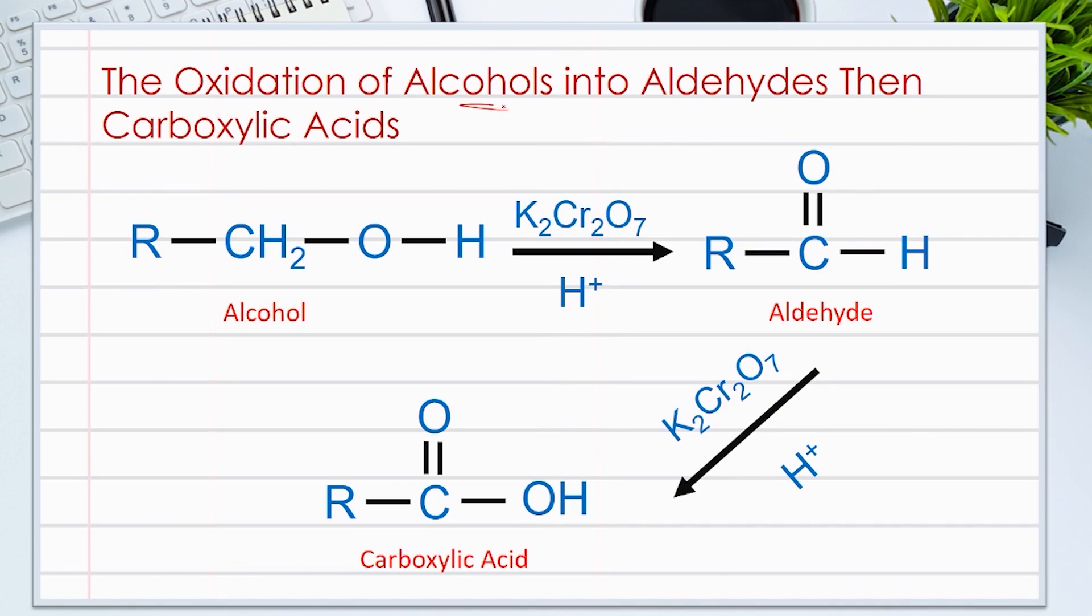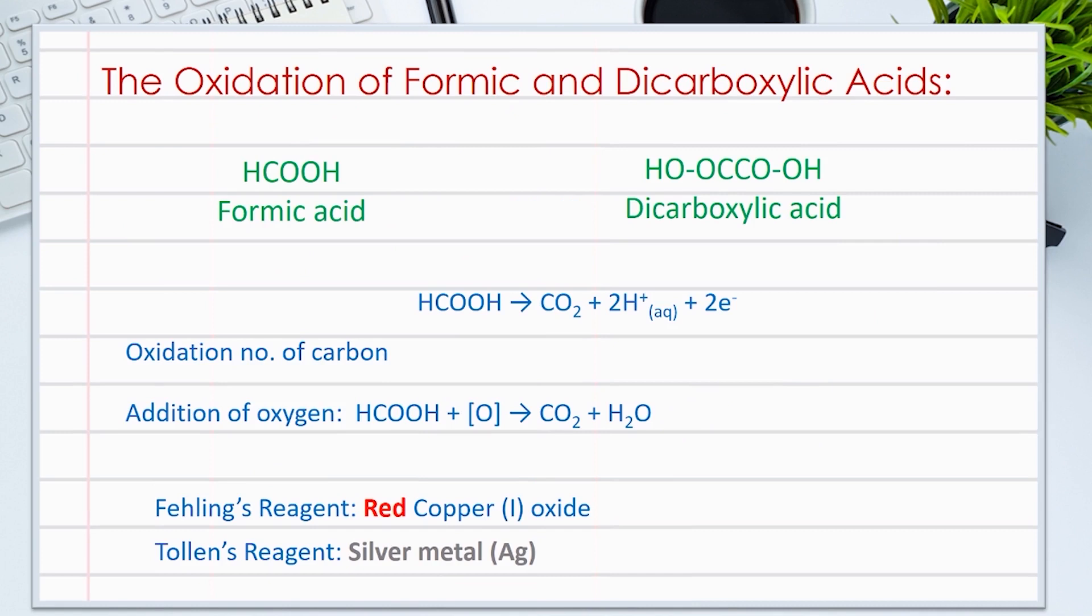We talked about the oxidation of alcohols first into aldehyde, then into carboxylic acids. One example was the oxidation of alcohol using potassium dichromate to give first aldehyde, then carboxylic acid.